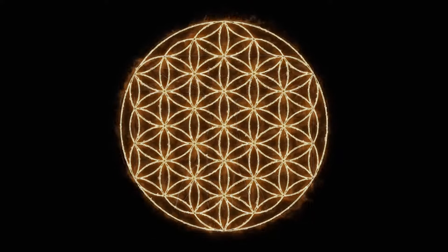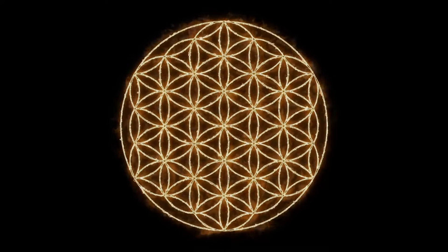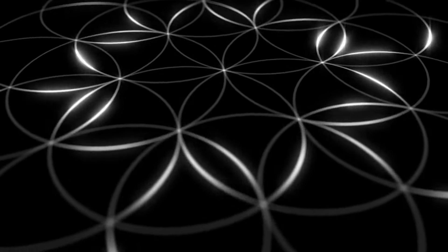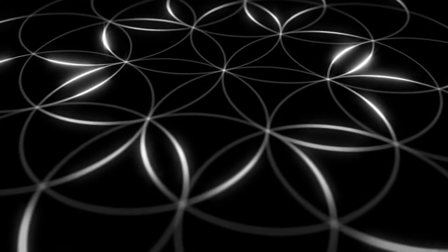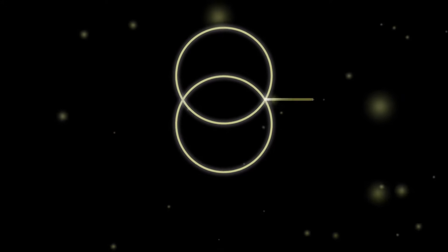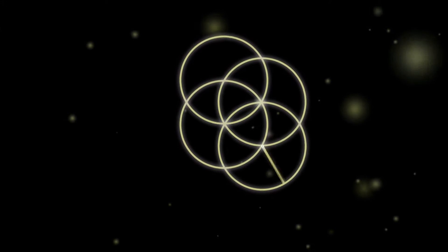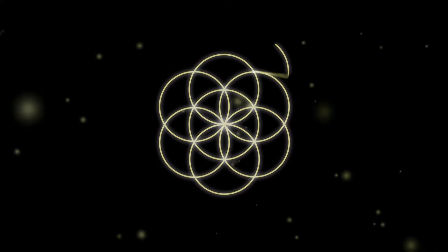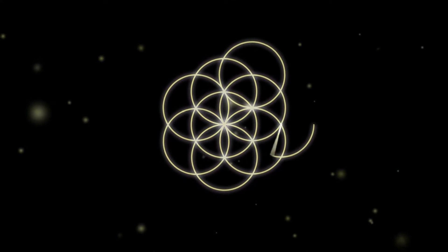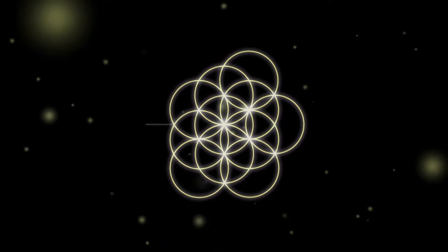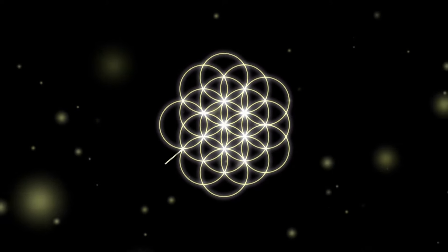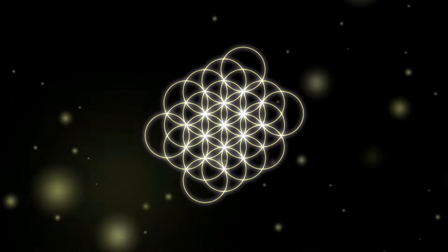The Flower of Life is a complex and multi-layered pattern, but its design is really quite simple. It's typically made up of 19 overlapping circles that form a flower-like pattern. The idea is that the symbol can be extended endlessly by adding circles to it, which also makes it a representation of eternity and the endless cycle of life. While the symbol is made up of circles, it features a hexagonal outline.